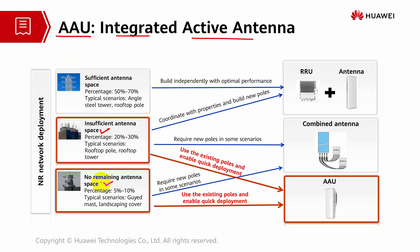There is no remaining antenna space, and this utilizes a lot of space. Using AAU system allows you to reuse existing poles and enable quick deployment. Without it, in most scenarios, you require a new pole — you can't use the existing one and have to coordinate with other property owners to build new poles. That is the most challenging part with the existing system, which is RRU plus an antenna system.